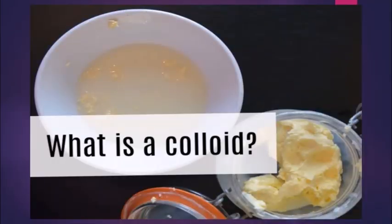Next is a colloid. A colloid is a heterogeneous mixture in which the particles cannot be seen with the naked eye. If you cannot see the particles with your naked eye, then it is called a colloid — but it should also be a heterogeneous mixture. The diameter of colloidal particles is around 10 raised to minus 5 meters. For example, if you look at milk, all the particles are spread uniformly and you cannot see them with the naked eye — so that is a colloid.